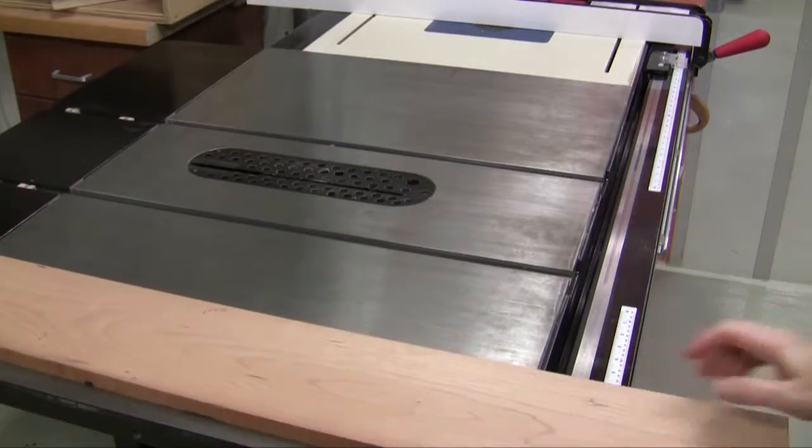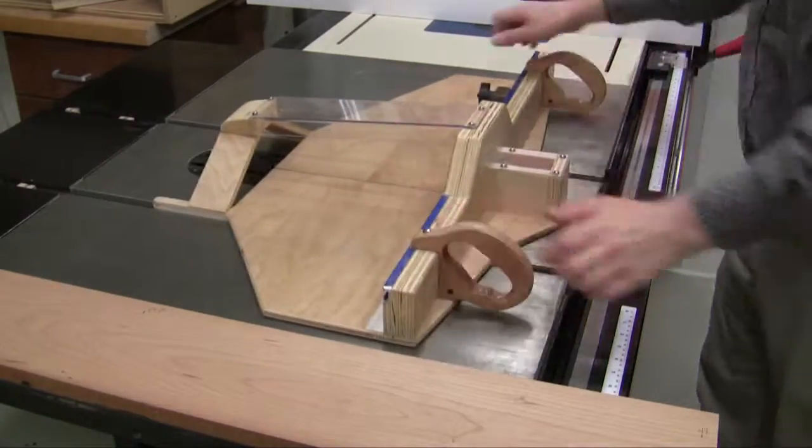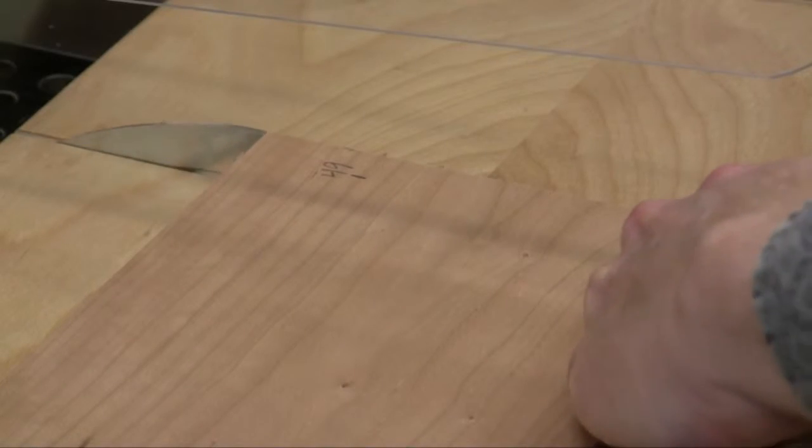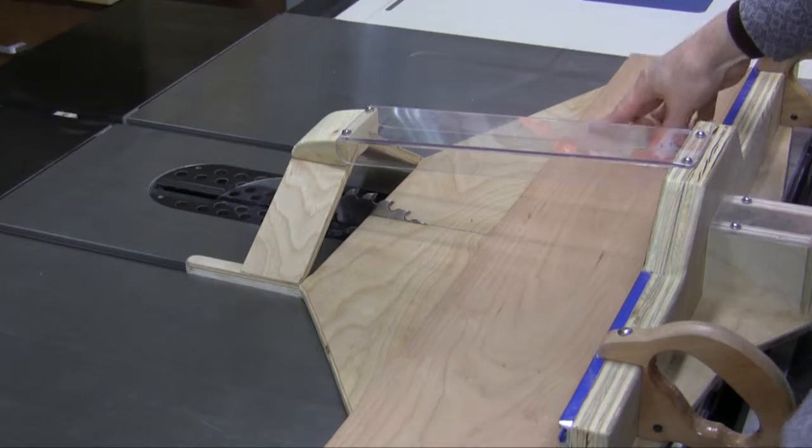In this video we'll make the neck. Mark your cherry at 24 and a half inches from one end, install the sled, and remove that block. Raise the blade just above the board, then cut this at 24 and a half inches.